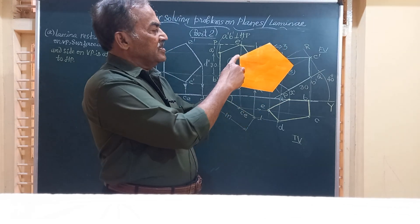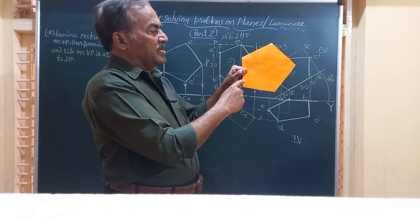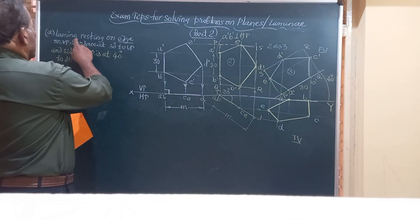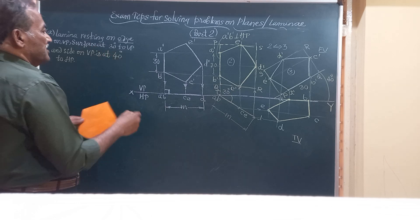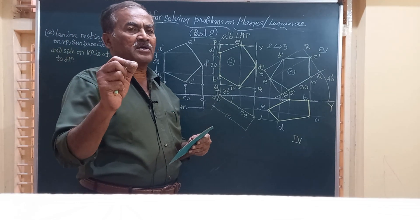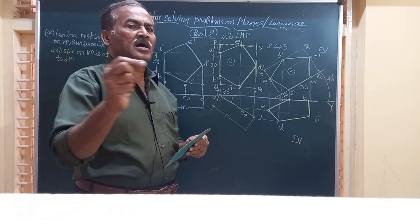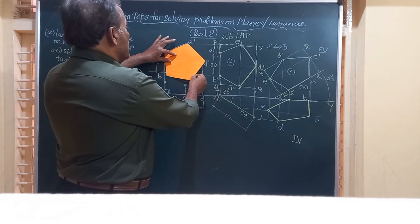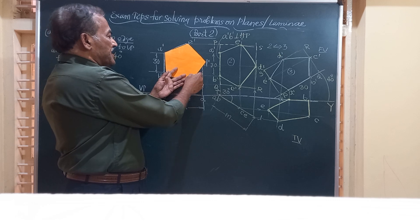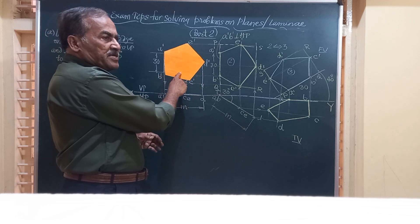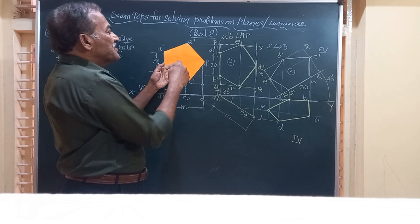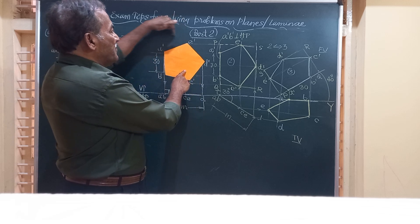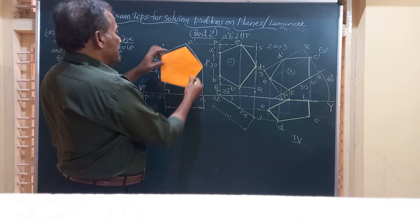This is the pentagon I have taken which has got a side 30 mm and this side can be called as AB. In the question it says it is a pentagonal lamina resting on edge on VP. Whenever the lamina has to rest on an edge or on a corner on VP, place the lamina on VP. Now we have taken pentagonal lamina, we have placed it on VP and we've obtained in the front view the regular pentagon of side 30 mm and in the top view you see it as a line on XY.